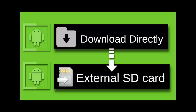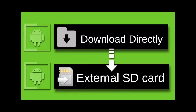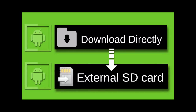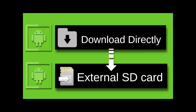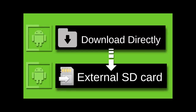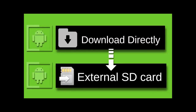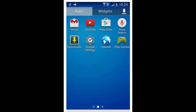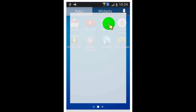UC browser is the best browser for fast download and they also give the option to change the location for download files. So first, install the UC browser app from the Google Play Store.